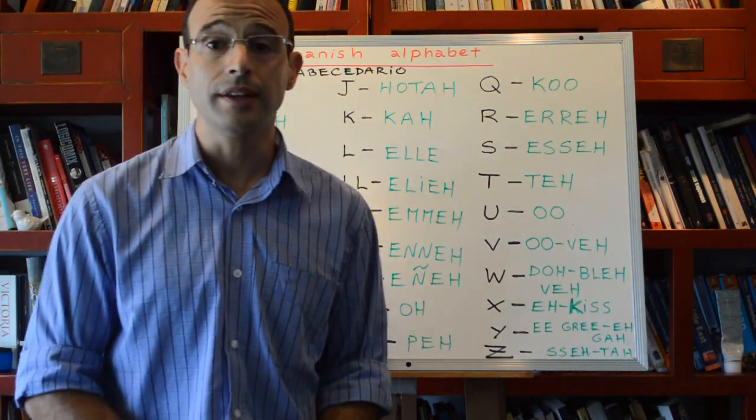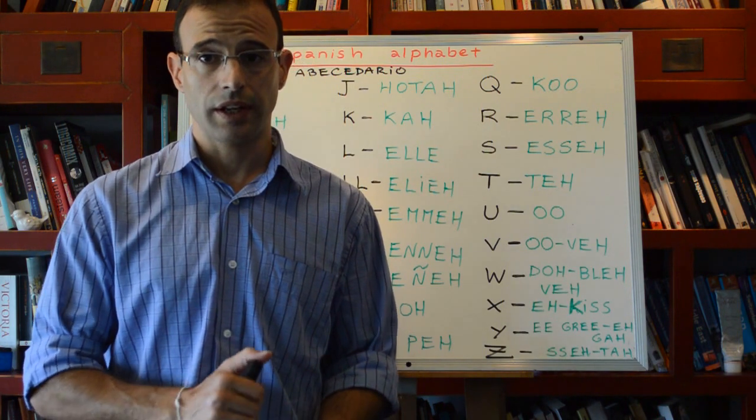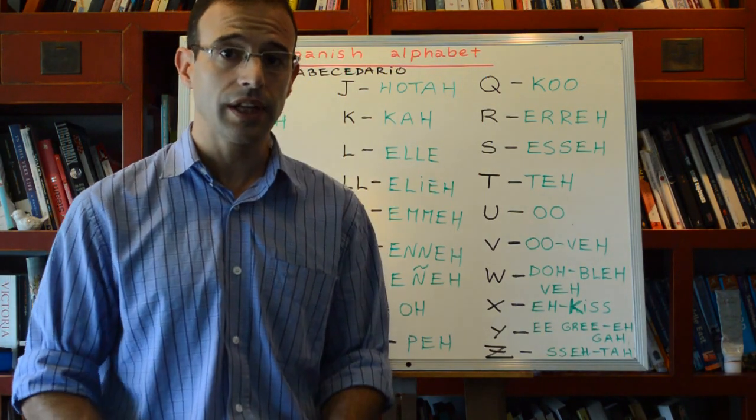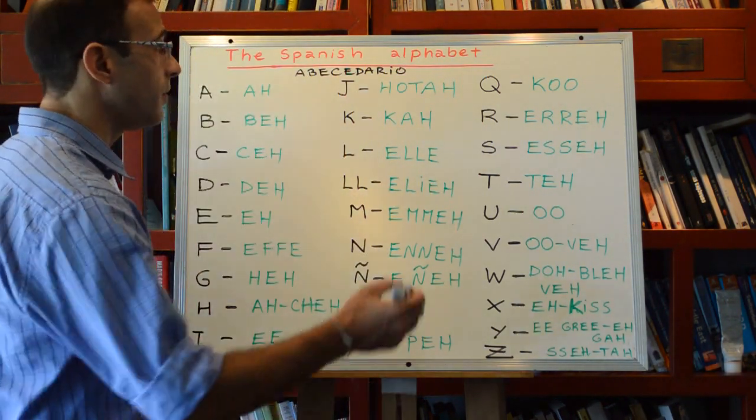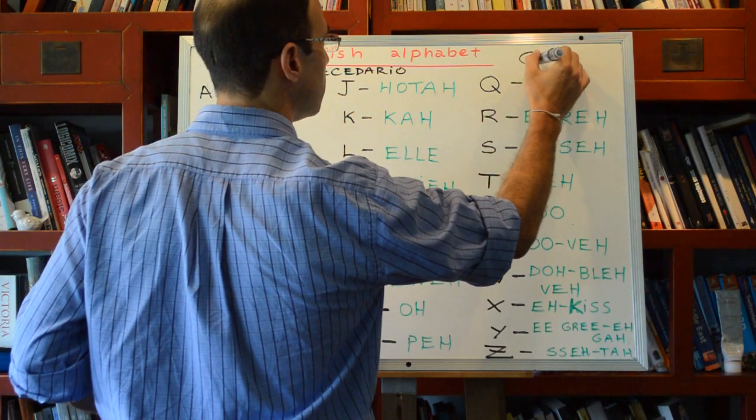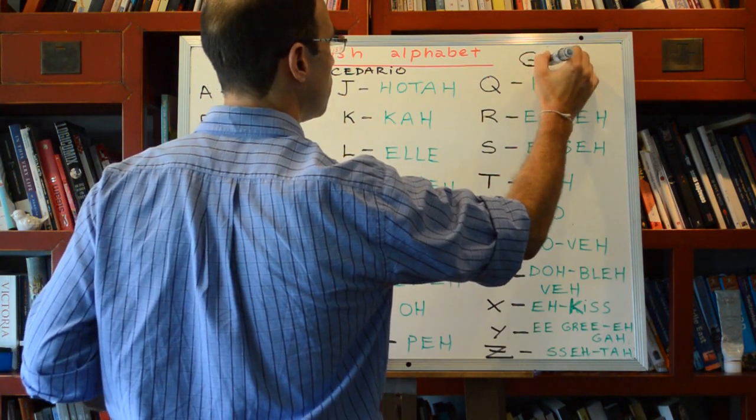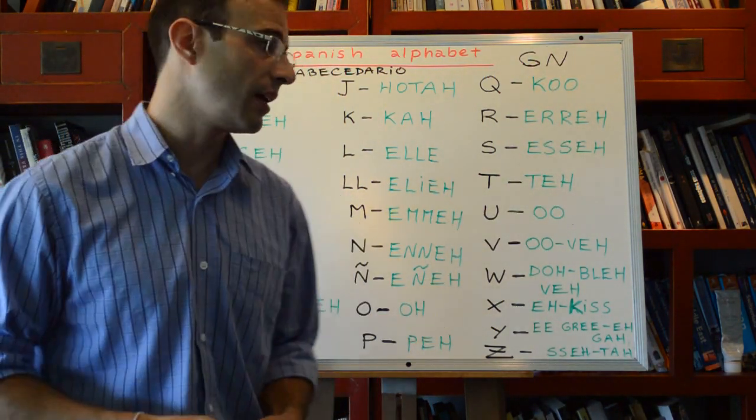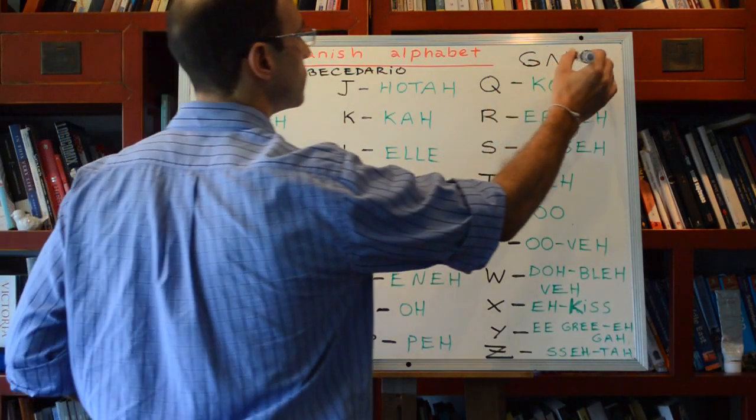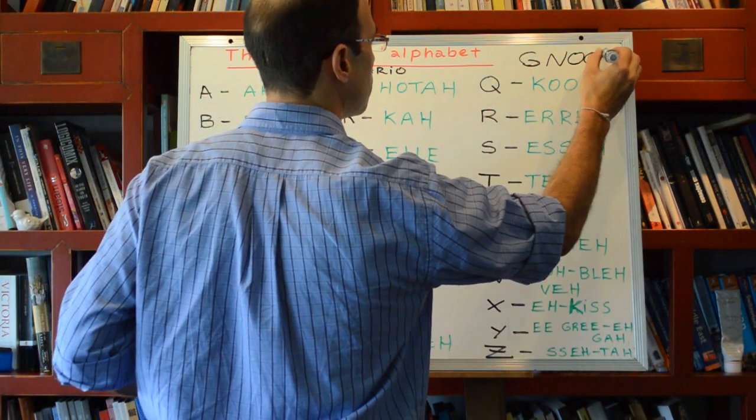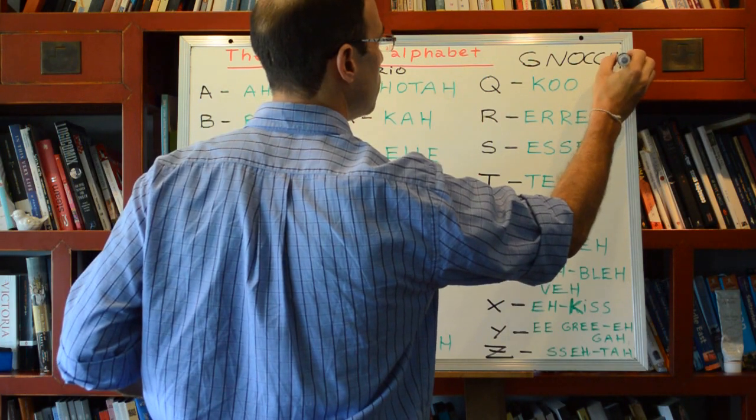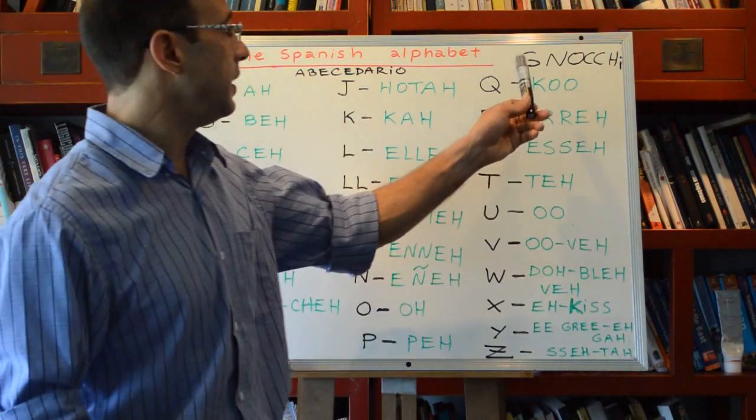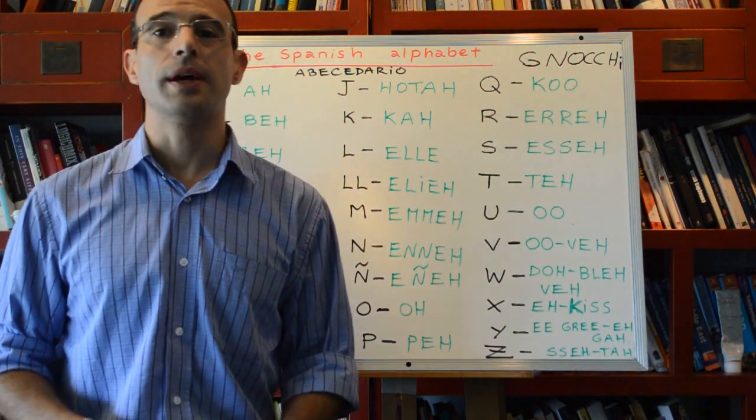The eñe is a typical Spanish letter. How is it pronounced? I know this sound does not exist in English but it does exist in Italian. In Italian you produce the same sound with a GN, like in gnocchi.